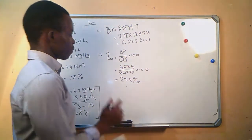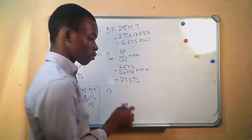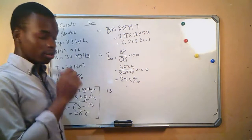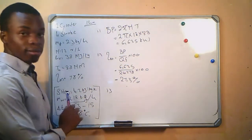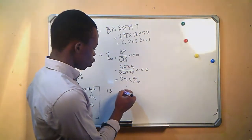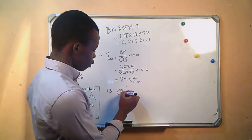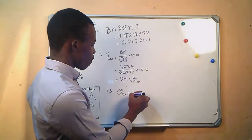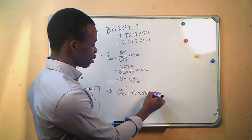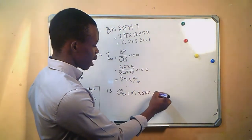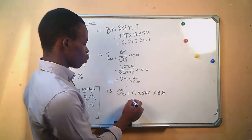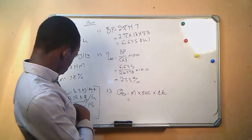Question 1.3: the energy carried away by the fuel gases. Energy to the exhaust equals mass × specific heat capacity × change in temperature. Using the mass of water through the exhaust gas calorimeter.